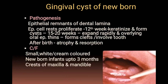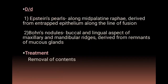The gingival cyst of the newborn is seen in newborn babies, mainly due to dental lamina epithelial remnants. These remnants proliferate and around 15 to 20 weeks become a cyst. It appears as small, white, cream-colored cysts in newborns up to 3 months at the crest of the maxilla and mandible, or derived from remnants of mucus glands. Treatment is removal of the condensed content.